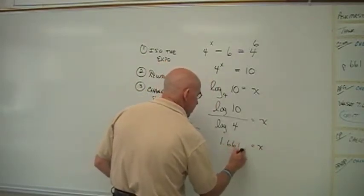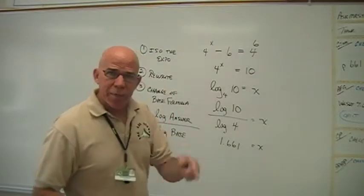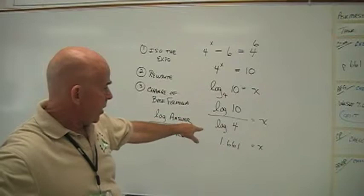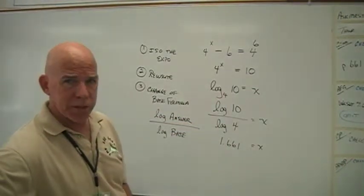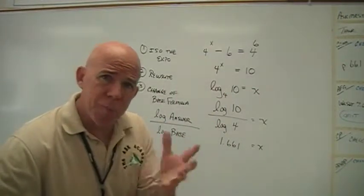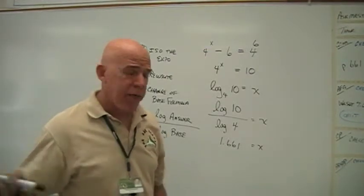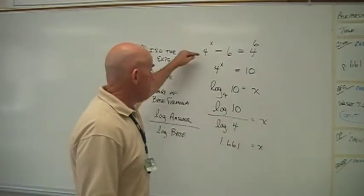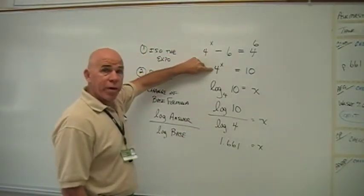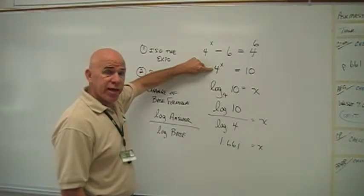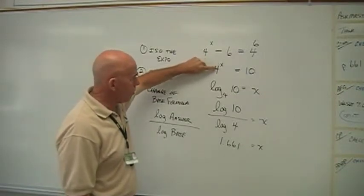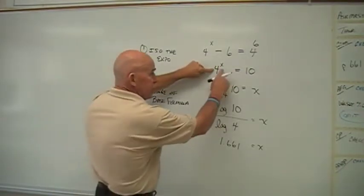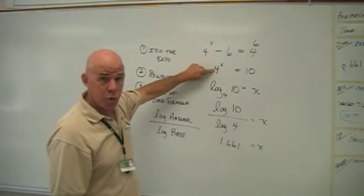I think if I remember right, I don't have my calculator in front of me, but log base 10 of 10 divided by log base 10 of 4 is the number 1.661. Now let's go back again. Let's think logically just a minute. Does this make sense to us?